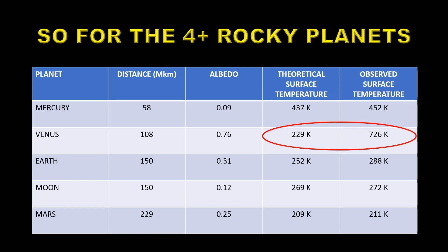Venus on the other hand has a huge difference between the theoretical temperature and the observed temperature. The theoretical temperature is 229 degrees Kelvin, the observed temperature is 726 degrees Kelvin and that's because Venus has a very thick atmosphere mainly consisting of carbon dioxide.